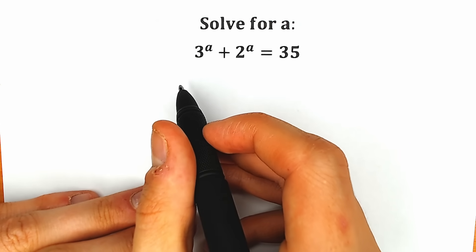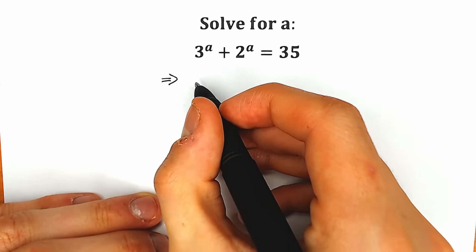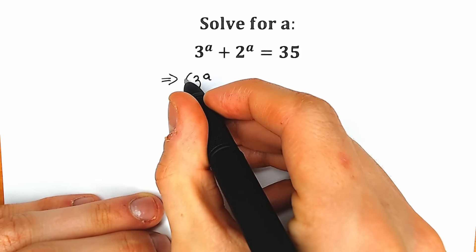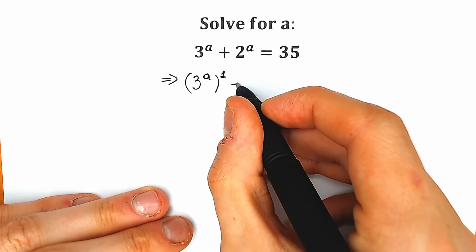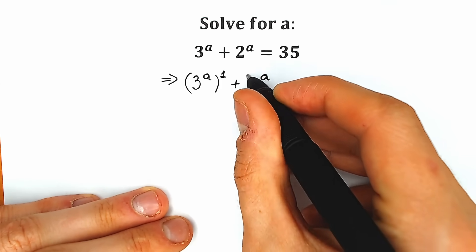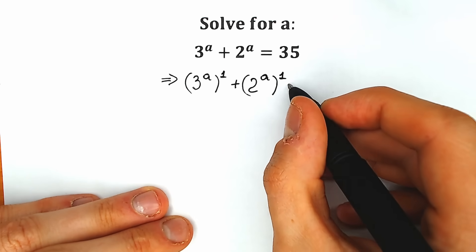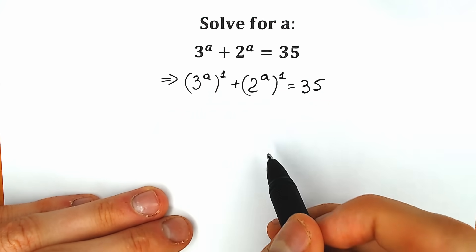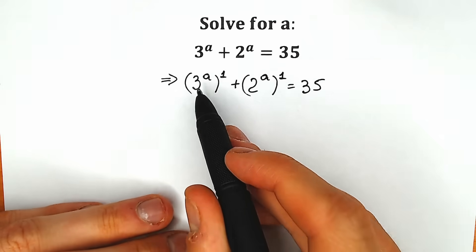First, here are a few really important tricks. First of all, instead of 3 to the a, let's write it as 3 to the a to the power 1. It changes nothing, but it helps us a lot. Similarly, instead of 2 to the a, let's write 2 to the a to the power 1. Equal to 35.